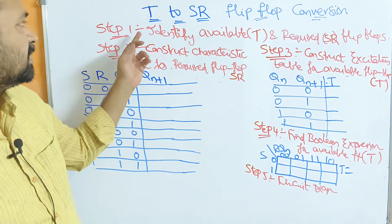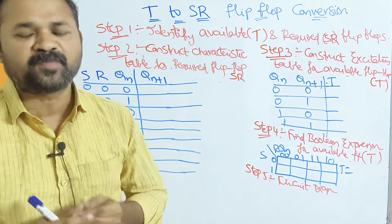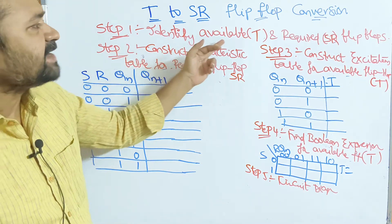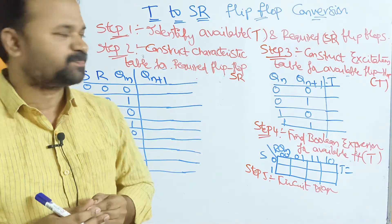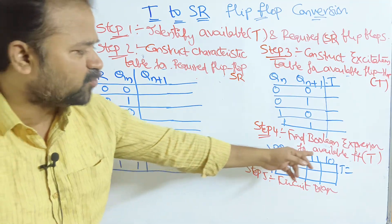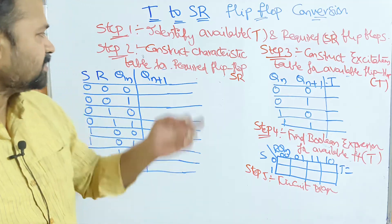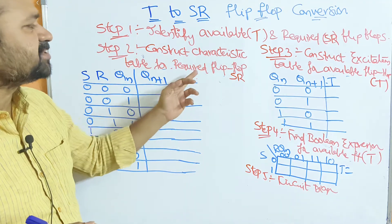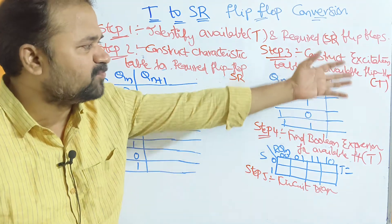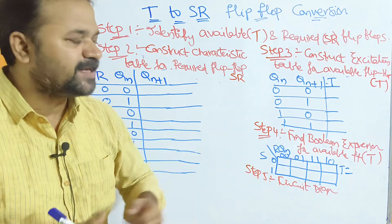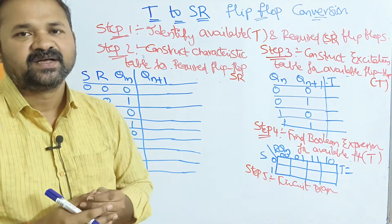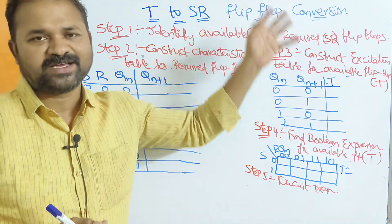Let us discuss T2SR Flip-Flop Conversion. Here we have to follow 5 steps. Step 1 is identify available and required flip-flop. Step 2 is based upon the required flip-flop. Step 3 and Step 4 are based upon the available flip-flop. Step 2 is construct characteristic table for the required flip-flop. Step 3 is construct excitation table for the available flip-flop. Step 4 is find the Boolean expression for the available flip-flop. And Step 5 is draw the circuit diagram. Now let us see all the steps one by one.